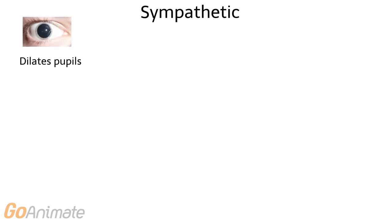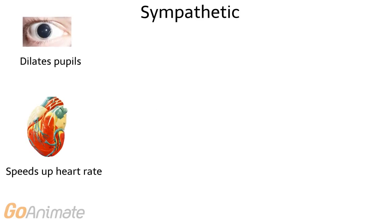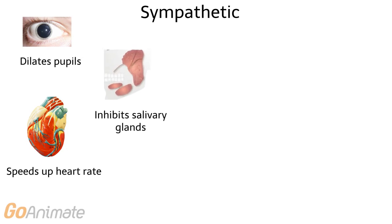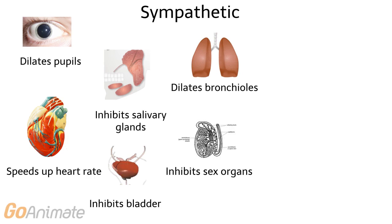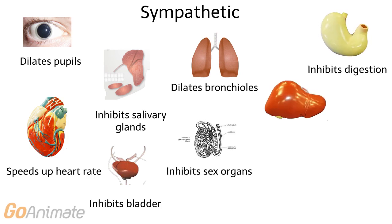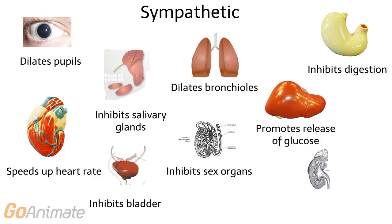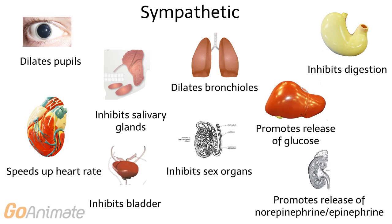The sympathetic nervous system dilates the pupils, speeds up the heart rate, inhibits the salivary glands and bladder, dilates the bronchioles, inhibits the sex organs, inhibits digestion, promotes the release of glucose from the liver, and promotes the release of norepinephrine and epinephrine from the adrenal glands.